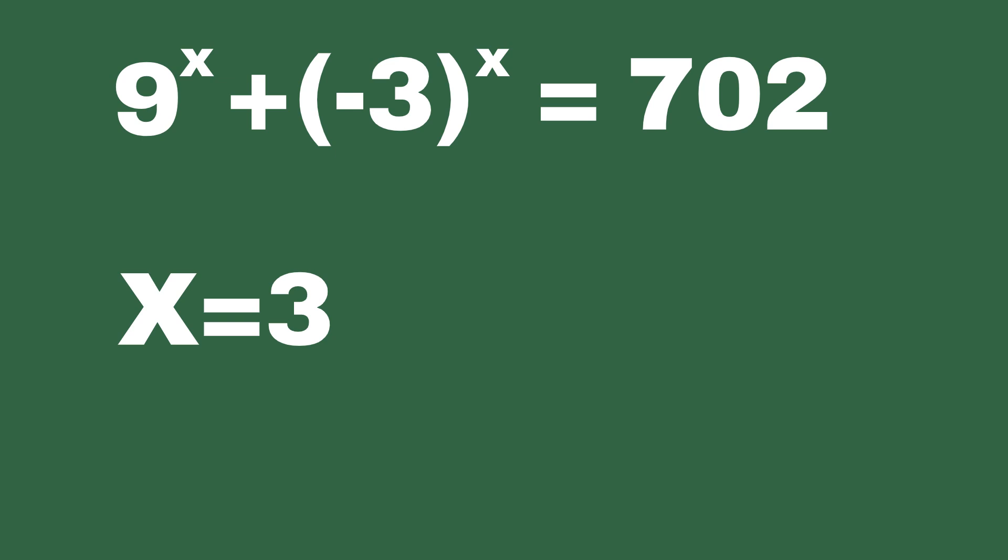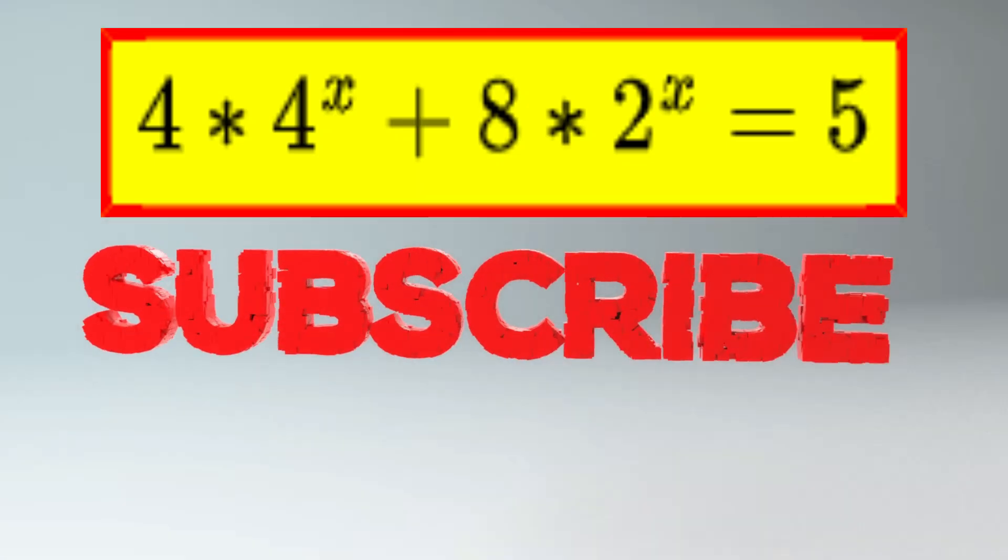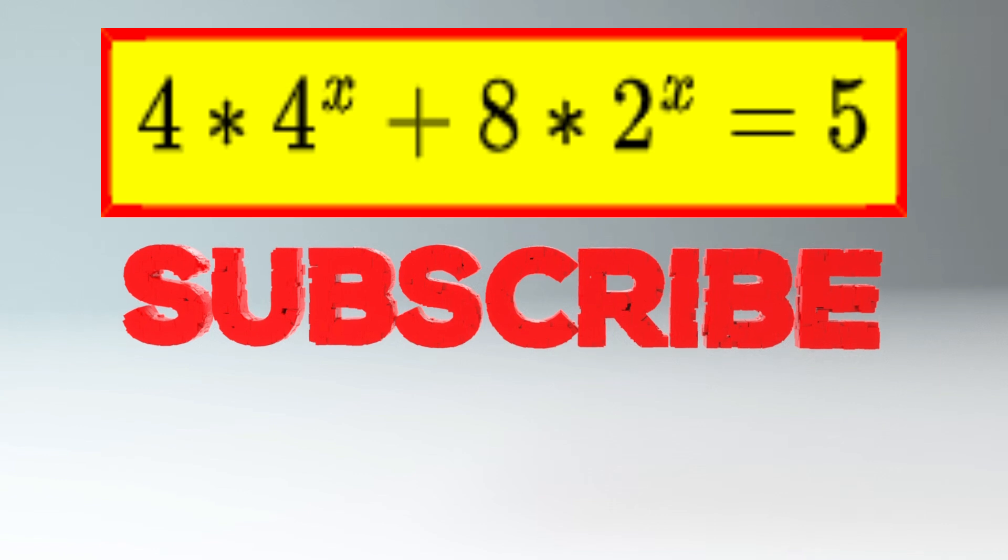Now, can you use this trick to find x in this equation, 4 to the power x minus 8 times 2 to power of x equals 5?